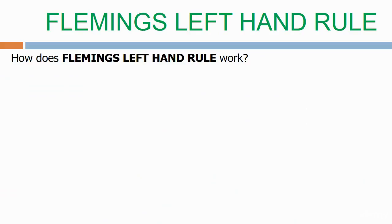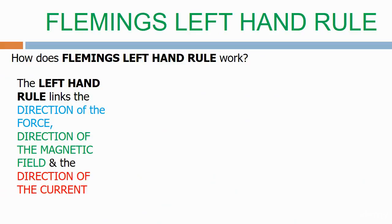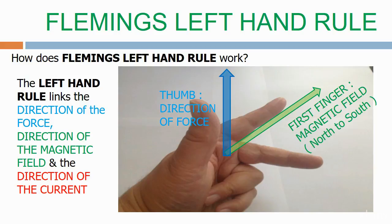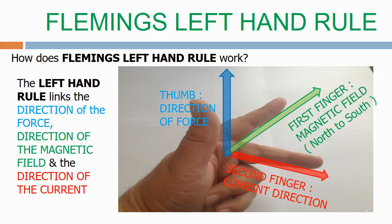How does Fleming's left hand rule work? The left hand rule links the direction of the force, the direction of the magnetic field, and the direction of the current. Place your left hand as shown in the picture. The thumb represents the direction of the force. The first finger represents the direction of the magnetic field, north to south. The second finger represents the direction of the current. Fleming's left hand rule is a really easy way to link all three things together.